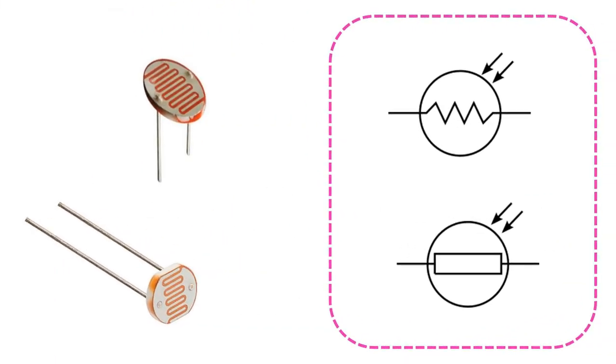The symbols here are used for the dependent resistor known with the abbreviation LDR, which is the abbreviation of the initials of the expression light-dependent resistor. LDRs are also known as photoresistors. They are circuit elements that show low resistance in the light and high resistance in the dark.